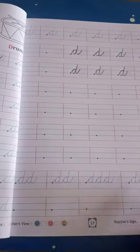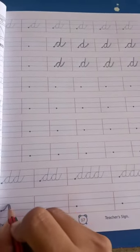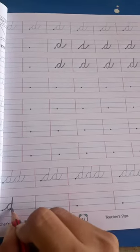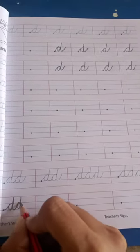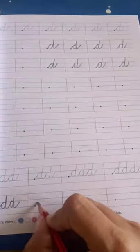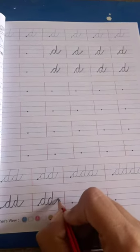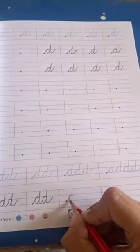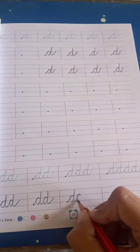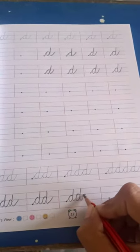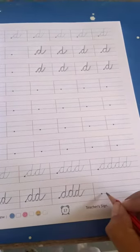So this you have to complete. उसके बाद यह repetition वाला भी करेंगे. देखो. एक D बनाया फिर उसी की tail से हम दूसरा भी बनाएंगे. इस तरह से. Pencil को stop नहीं करेंगे कहीं पे भी. Pencil आपकी continuously चलेगी.